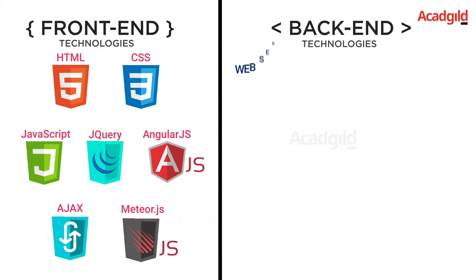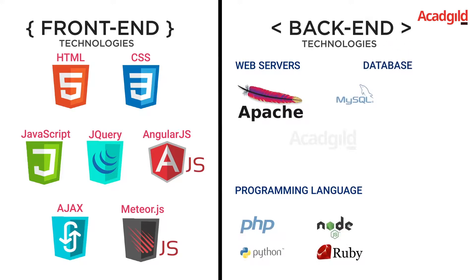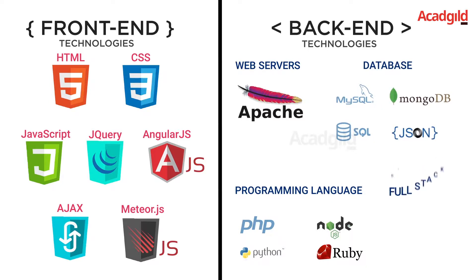And back-end technologies like web servers (Apache), programming languages (PHP, Node.js, Python, Ruby), databases (MySQL, SQL, MongoDB), and JSON. The list doesn't stop here. A full-stack developer usually has a good grasp of UI and UX — user interface and user experience — as well.